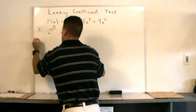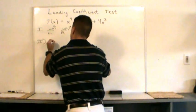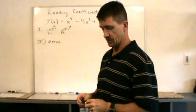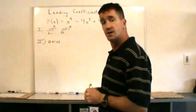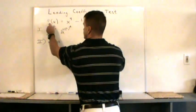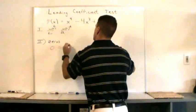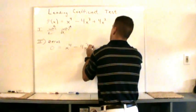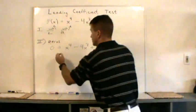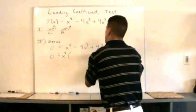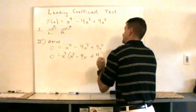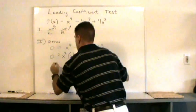Step two is finding the zeros. We're going to determine the x-intercepts of this function — those values are called the zeros of the function. To find x-intercepts, you set y equal to zero and solve for x. We're going to factor. Notice we can factor an x² out of this, and we're left with x² - 4x + 4. We're going to factor this completely — we have a trinomial there.